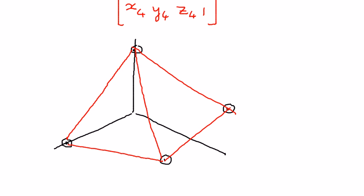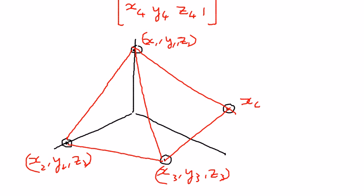And if I call this one as x1, y1, z1, this, if I call this one as x2, y2, z2, if I call this as x3, y3, z3, and then this one as x4, y4, and z4,